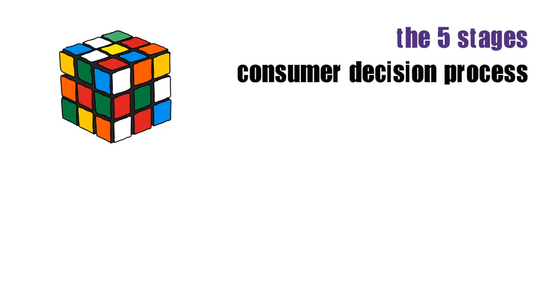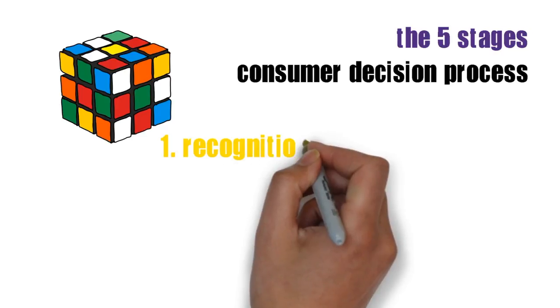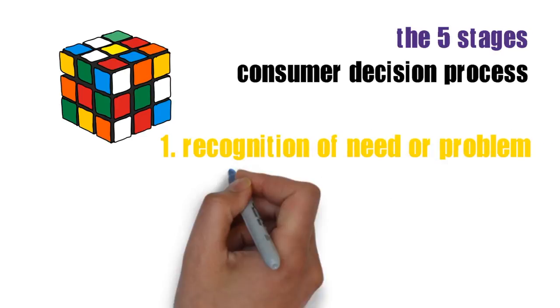A simple model that clearly illustrates how consumers make their purchasing decisions is that which breaks down the whole buying process in five distinctive stages. These are the recognition of a need or problem, the searching for information, the comparing of alternatives, the actual purchase, and finally the post-purchase evaluation.